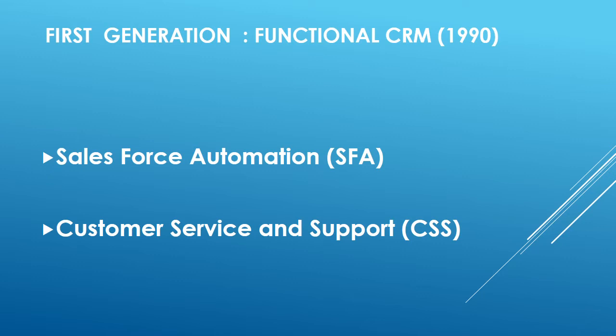The second feature — customer service and support — involved after-sales service, helpdesks, helplines, call centers, and field service support. This is where contact points available for customers to reach the company began — whether for an inquiry, complaint, payments, or delivery. Before this, customers had to visit the site or retail store even for a small piece of information. That is how CRM began: the ability to service individual customers.